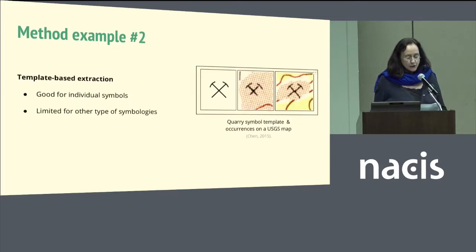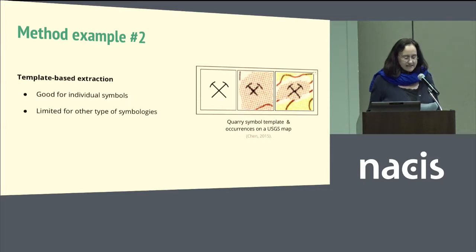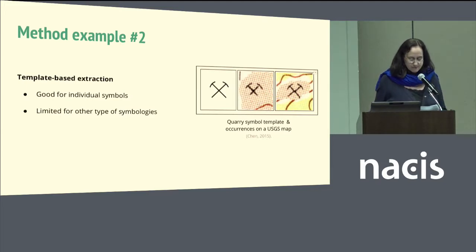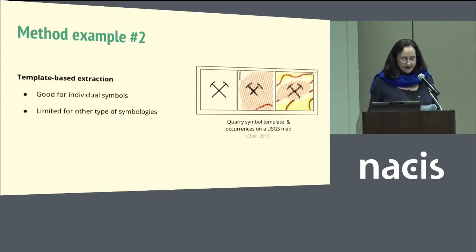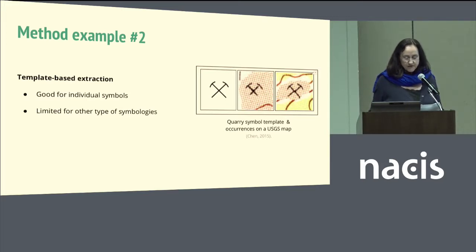In another method, the template-based extraction, we look for occurrences of a specific pattern throughout a map. This approach is good at identifying individual symbols, for instance the quarry symbol shown here. However, the approach is of limited use for some other types of symbologies.